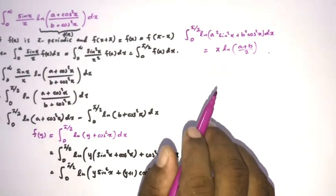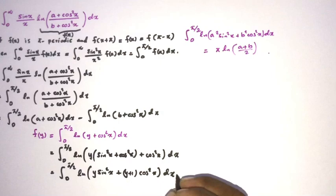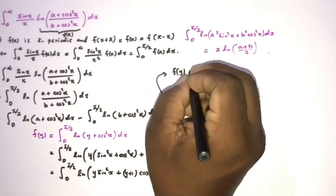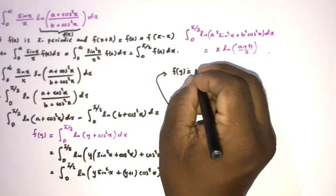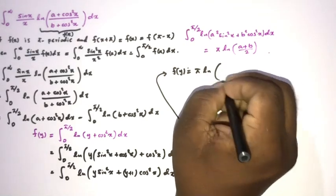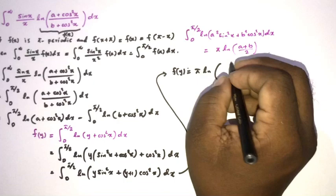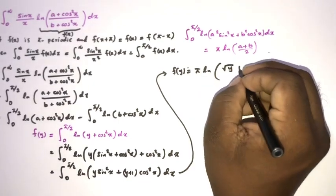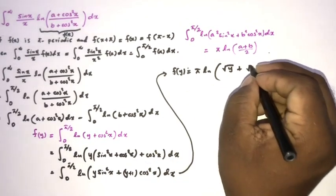To evaluate that integral I used Feynman's technique of integration. So we can write f(y) equals pi times the natural log of (√y + √(y+1))/2, since here a² corresponds to y so a = √y, and b² corresponds to y+1 so b = √(y+1).